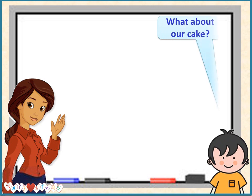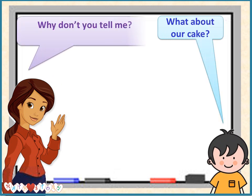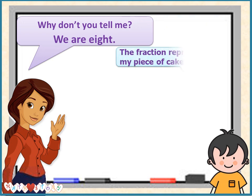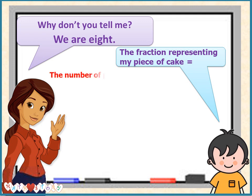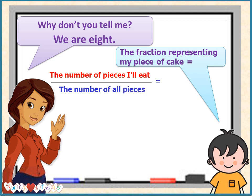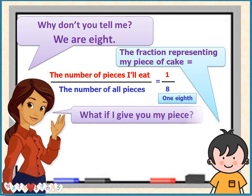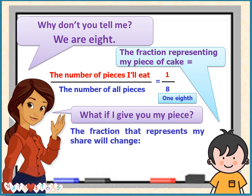What about our cake? Why don't you tell me? The fraction representing my piece of cake equals the number of pieces I will eat over the number of all pieces, which equals one over eight, or one eighth.